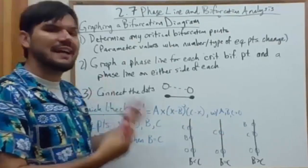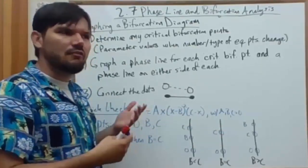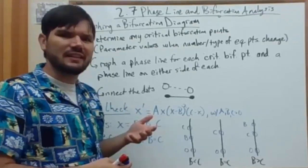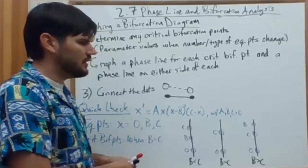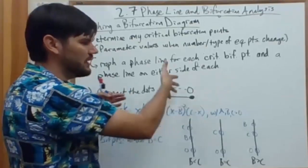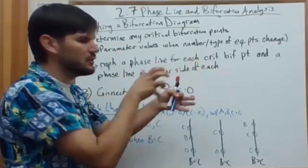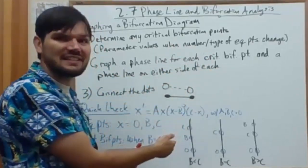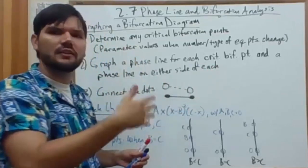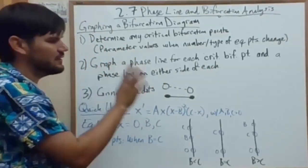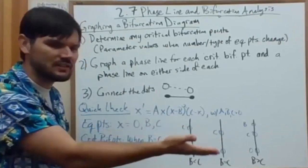And what these bifurcation diagrams do is they represent the slope fields kind of like in a bookshelf. You can think of a shelf of books where each book, when you pull it out, is a slope field. When you put it back, all you're seeing is the phase line, and you're seeing a progression on those phase lines. At the very end, you finally show that progression by connecting the dots.